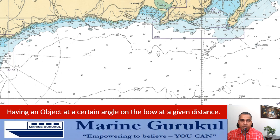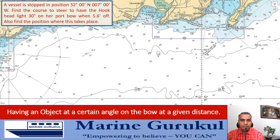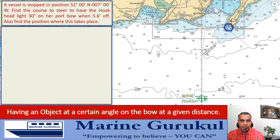Let us try to understand the technique using an example. A vessel is stopped in position 52 degrees 00 minutes North, 007 degrees 00 minutes West. Find the course to steer to have the Hook Head Lighthouse 30 degrees on her port bow when 5.6 miles off. Also find the position where this takes place. Let us first plot the initial position of own ship — you can see it coming up on the screen. Let us identify the object, the Hook Head Lighthouse, highlighted on the chart and marked as A.